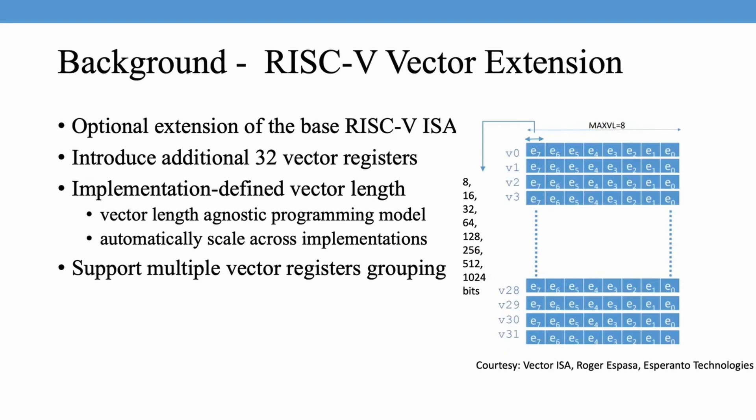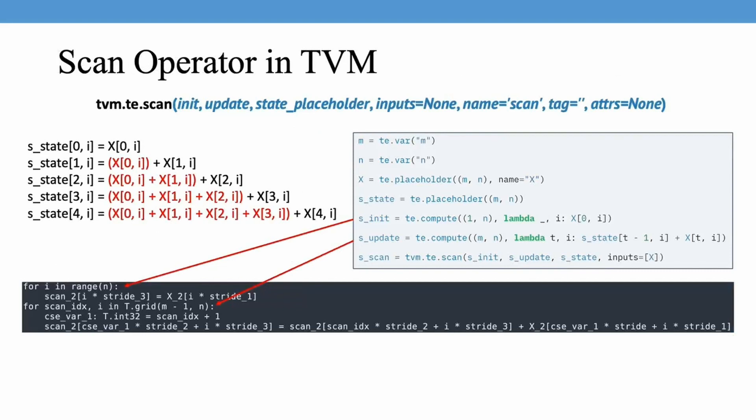In this work, we focus on utilizing RISC-V Vector Extension, or RVV. The vector register lane in RVV is implementation-defined, supported by its vector-lane agnostic programming model. Programs running on it can automatically scale across different implementations. RVV is also capable of grouping multiple registers together to form a longer vector register, which is useful for highly parallel workloads.